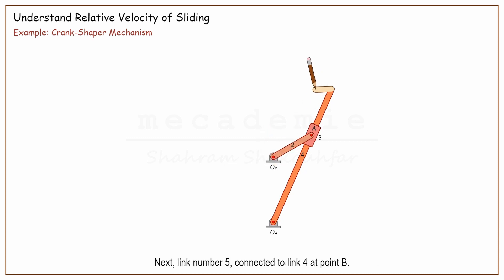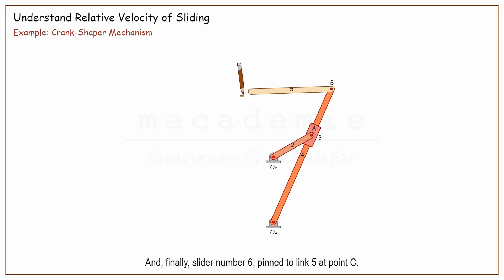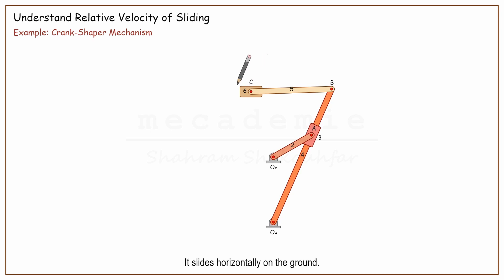Link number 5 is connected to link 4 at point B. And finally, slider number 6 is pinned to link 5 at point C, and it slides horizontally on the ground.